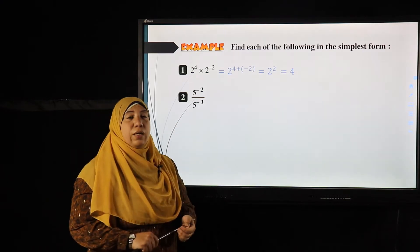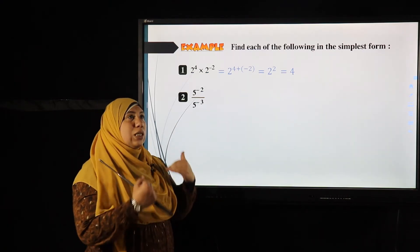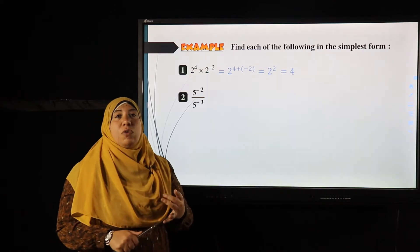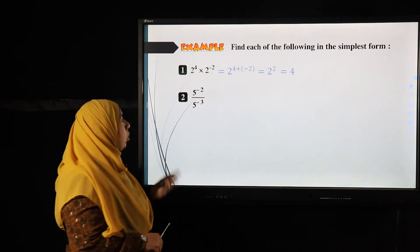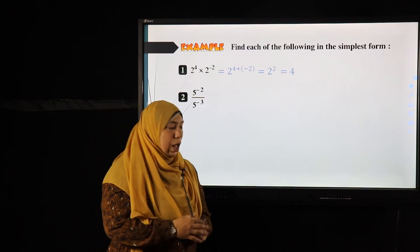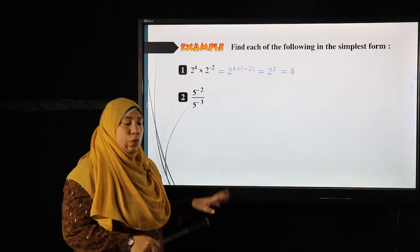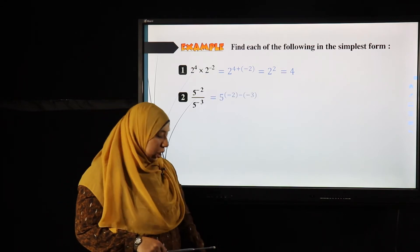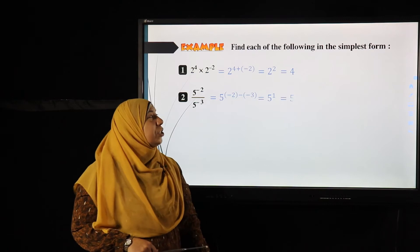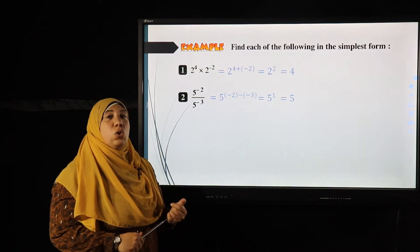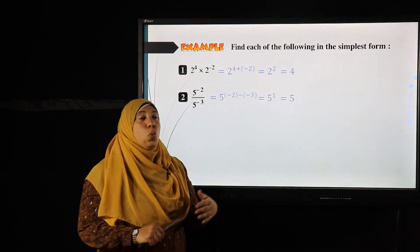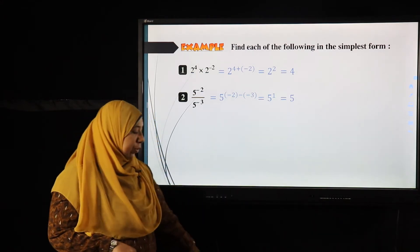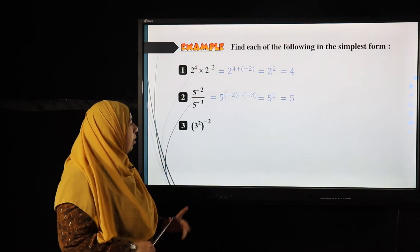Example two: five to the power negative two over five to the power negative three. This is division, so we subtract the powers. Don't worry about the negative powers yet — it will be negative two minus negative three, giving five to the power one, which is five. Again, we did not need to use the reciprocal rule.